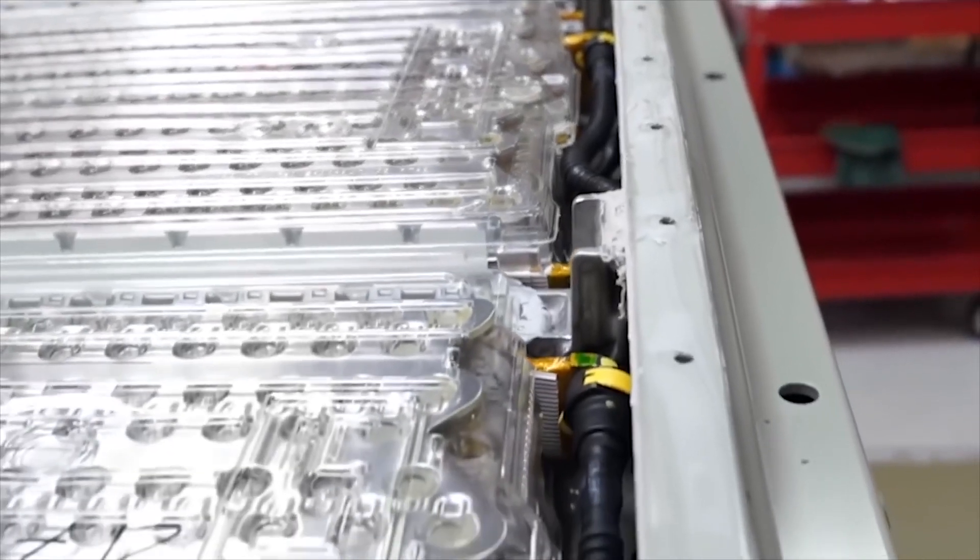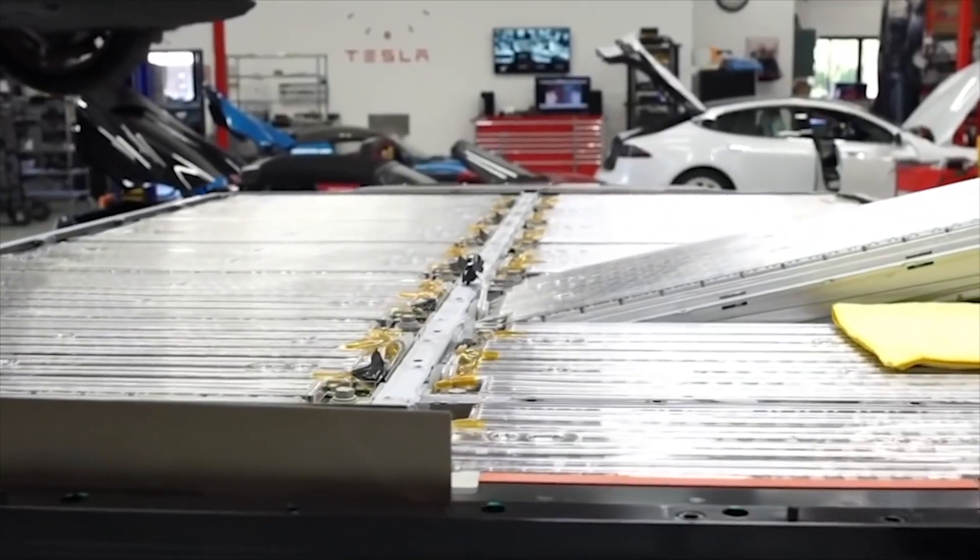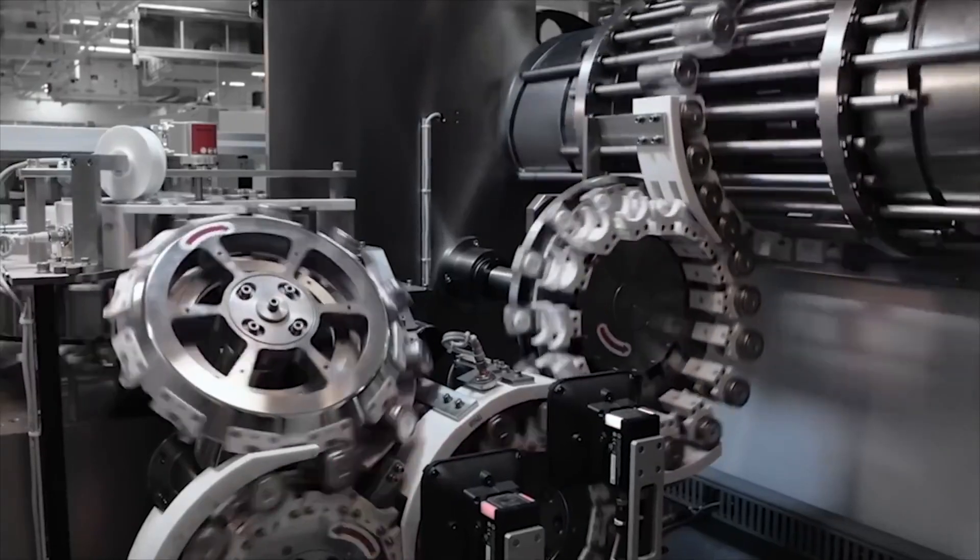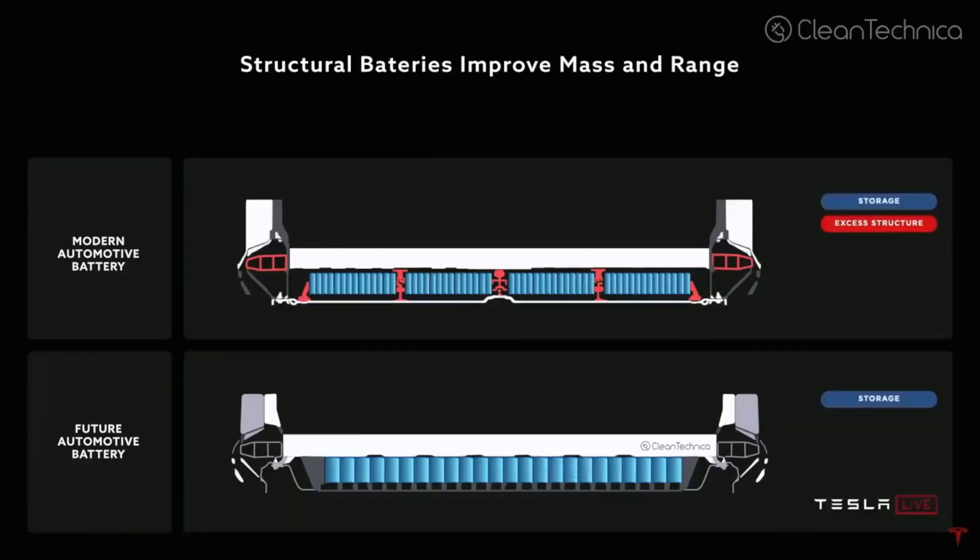Last month, Tesla's longtime battery partner Panasonic presented the 4680 lithium-ion cells it would be producing for Tesla. Panasonic's reveal also suggested that Tesla was ready to enter the next stage in 4680 cell production.